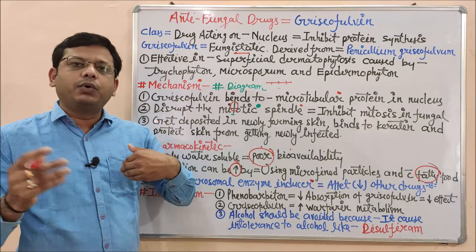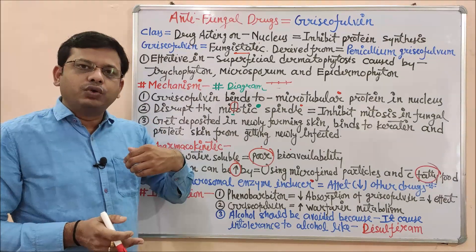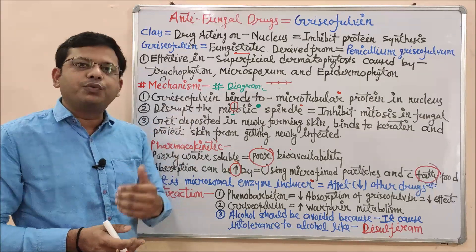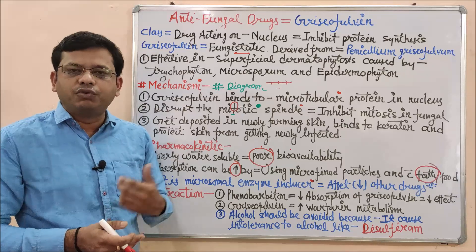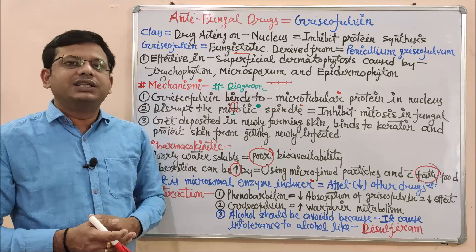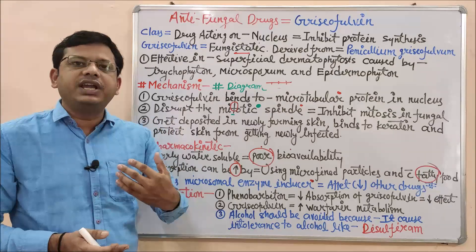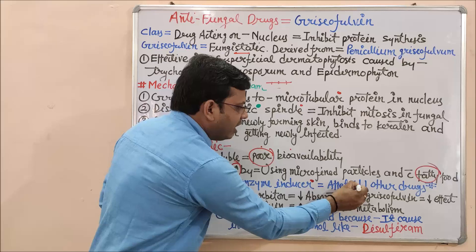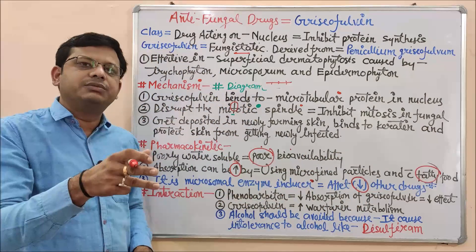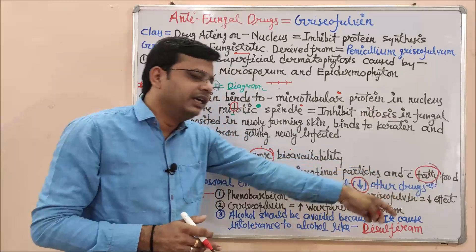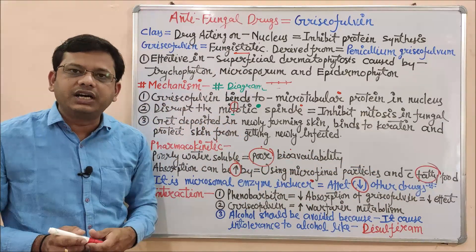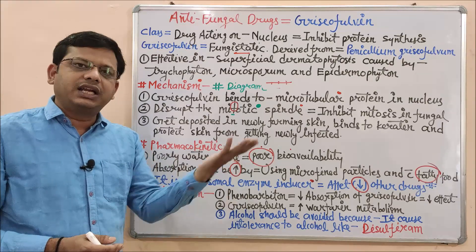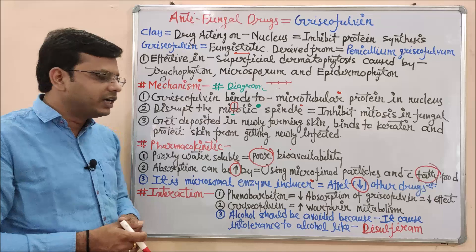If you are taking Griseofulvin along with another drug, it will induce microsomal enzymes responsible for hepatic metabolism, increasing their amount. There is a video on microsomal enzyme inducers as well. With enzyme induction, the activity of other drugs taken simultaneously will be slowed down because metabolism becomes faster. This is the main reason it can reduce the action of other drugs. Examples include phenytoin and warfarin.